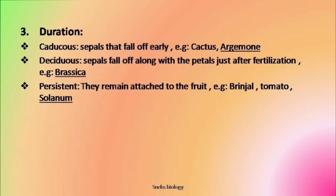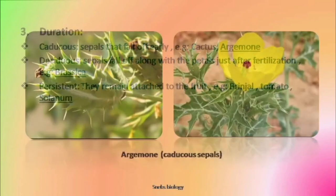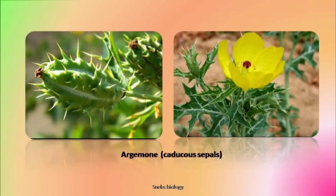The first one is caducous. Caducous means the sepals fall off as soon as the buds start to open. As soon as the job is done, the structure falls off. This is seen in case of cactus, Argemone, Papaver, etc.